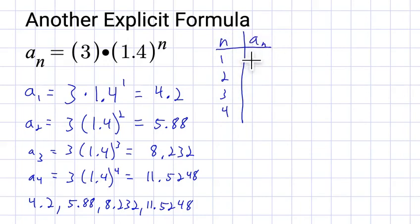And the actual terms, a_n, will be 4.2, rounding to the nearest tenths place, 5.9, 8.2, and 11.5.